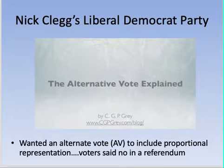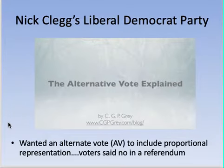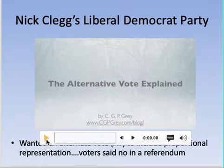Because the Liberal Democrats were a third party, they supported the idea of replacing the UK's first-past-the-post voting system — where the winner takes all in single-member districts — with what is known as the alternative vote, a form of proportional representation. Here is an explanation of how that would work.